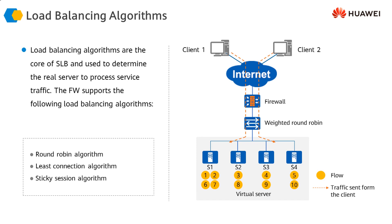With weighted algorithms, we assign a weight to each real server during configuration. For example, in weighted round robin, if one server has a weight of 2 and the others have a weight of 1, the firewall sends 2 connections to the higher-weight server before sending 1 connection to each of the others. So servers with higher weight receive proportionally more requests.